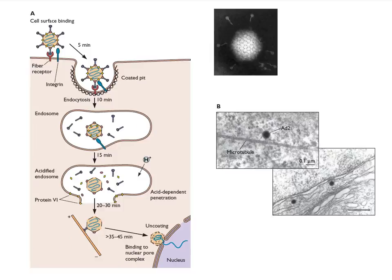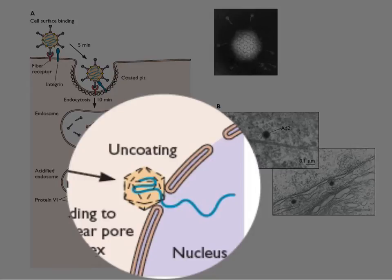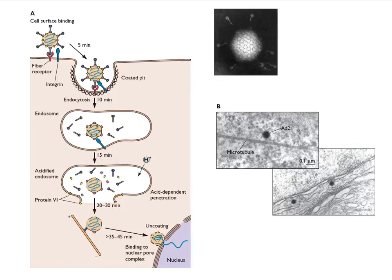So it's partially disassembled — not all the way, so it's still somewhat intact and can get out. It rides down the microtubules to the nucleus, docks onto a nuclear pore, and puts its genome in the nucleus. So a unique strategy: you make a protein that pokes holes in the endosome, but you have to hide that protein in the intact virion so it doesn't act in the wrong place.